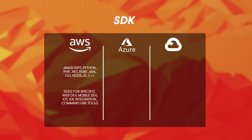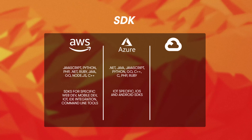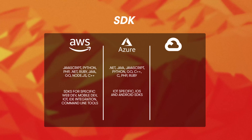But they aren't done there. There are also specific SDKs for web development, mobile development, IoT, IDE integration, and command line tools. Azure has a slightly simpler approach and mainly offers SDK versions for specific programming languages such as .NET, Java, JavaScript, Python, Go, C++, C, PHP, and Ruby. There are also IoT-specific iOS and Android SDKs, though.